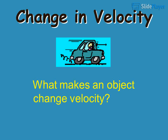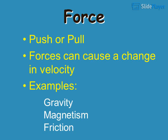What makes an object change velocity? Force — a push or pull — can cause a change in velocity. Examples include gravity, magnetism, and friction.